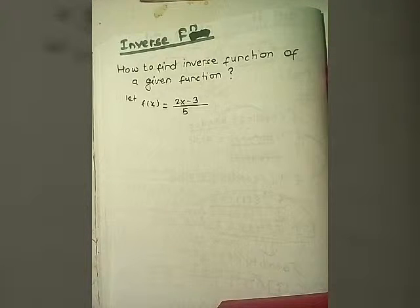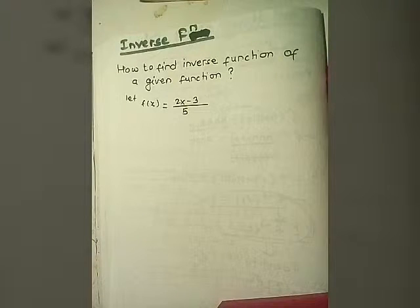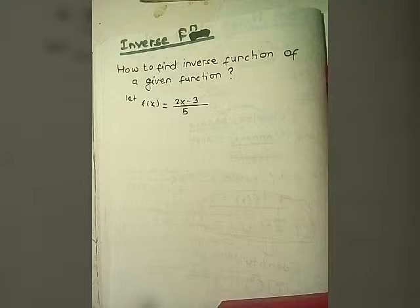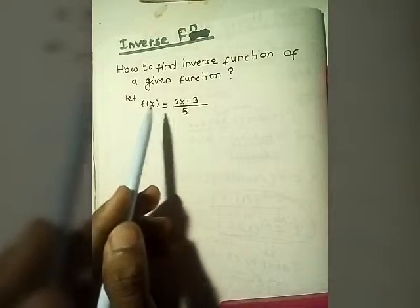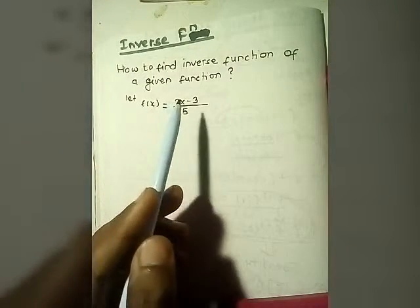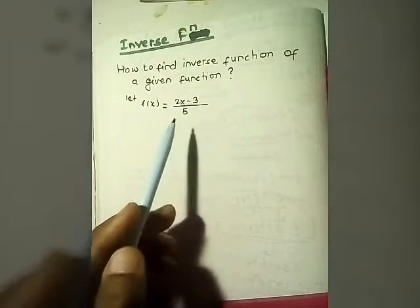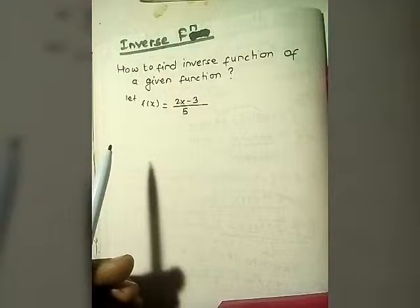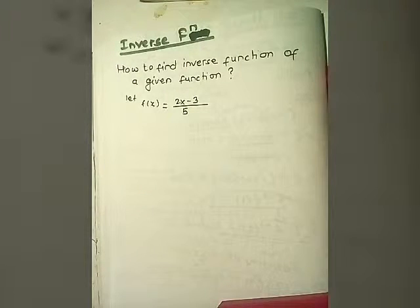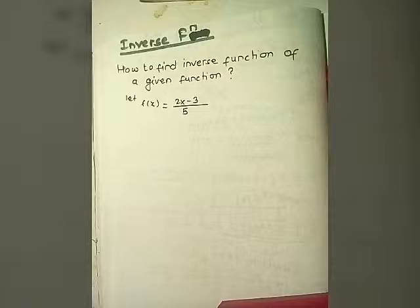In this video I'm going to talk about how to find the inverse of a function algebraically. We are given a function f of x equals 2x minus 3 divided by 5, and we need to find the inverse of this function. To make sense of the inverse, I'd like to use the flow method that we have done before.